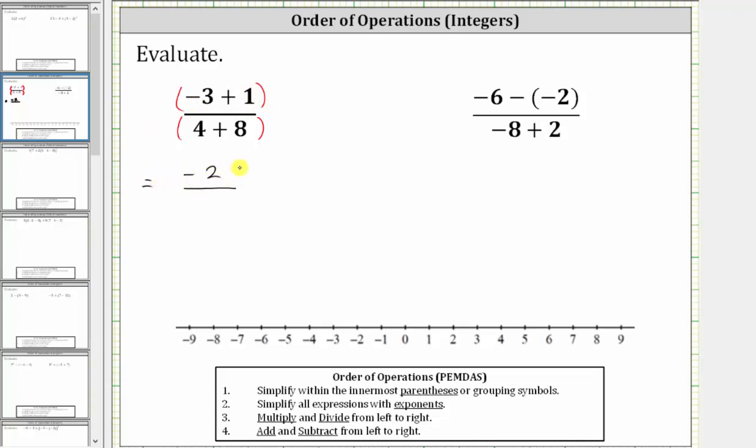If we need the review, we can model this sum on the number line. For negative three, we begin at zero and move left three units to negative three on the number line. And then because we are adding positive one from negative three, we move right one unit to negative two on the number line, giving us a sum of negative two.